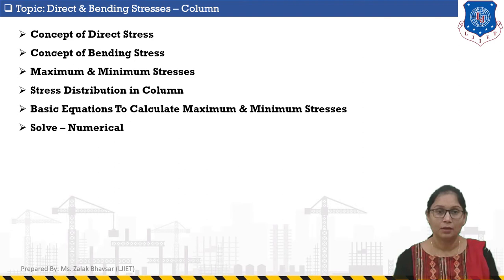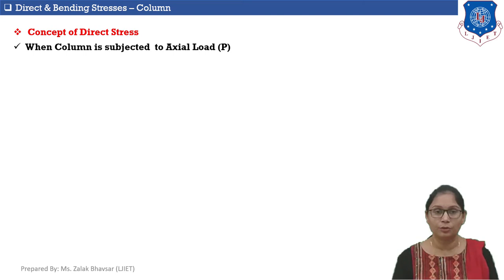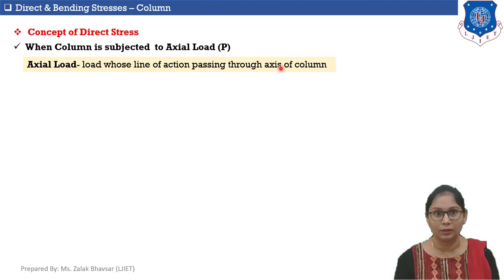Let's start with the concept of direct stress. Whenever a column section is subjected to axial load, direct stresses will be developed. In other words, axial load always produces direct stresses. First we need to define axial load: whenever a column section is subjected to a load whose line of action passes through the axis of the column, that load is called axial load.